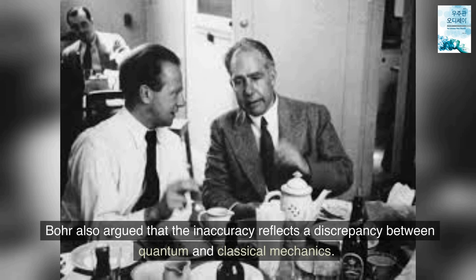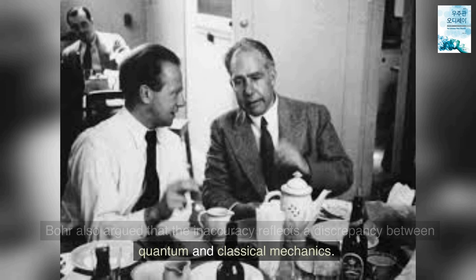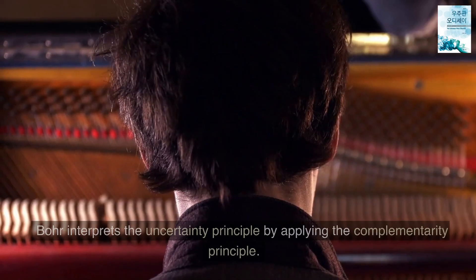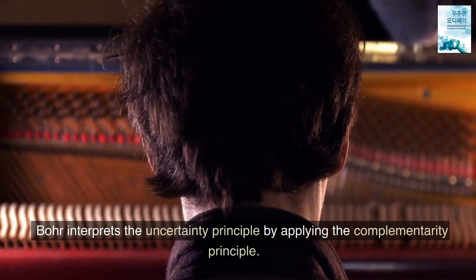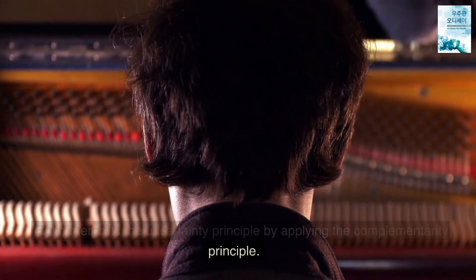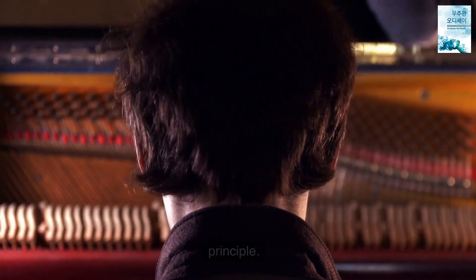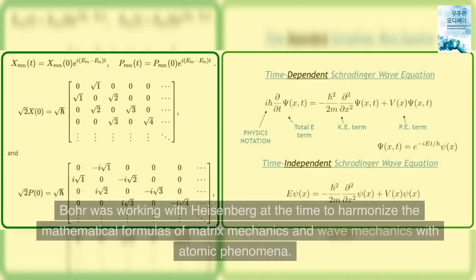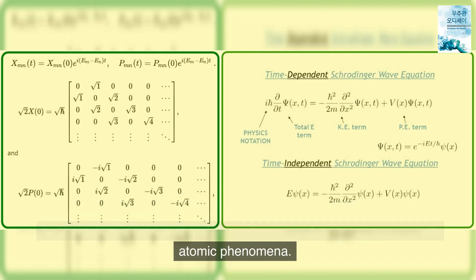Bohr also argued that the inaccuracy reflects a discrepancy between quantum and classical mechanics. Bohr interprets the uncertainty principle by applying the complementarity principle. Bohr was working with Heisenberg at the time to harmonize the mathematical formulas of matrix mechanics and wave mechanics with atomic phenomena.